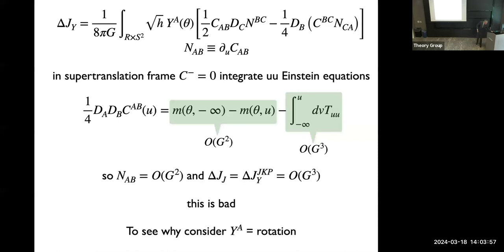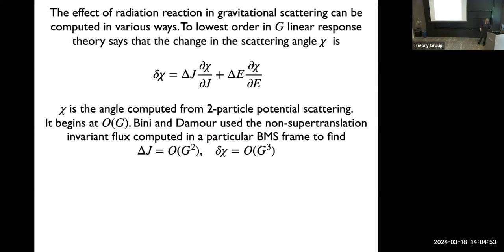The time derivative of the shear is also order G-squared. So you get that this invariant definition of the angular momentum flux starts at order G-cubed, because you have something order G-squared times G-squared divided by G — same thing here. You have a formula in which the flux of angular momentum begins at order G-cubed. And that is actually not what we expect, not even from textbook calculations. To see why this is a problem, let's look at the flux of angular momentum for a rotation. You can use the following: when you want to compute the effect of gravitational radiation in scattering at the lowest order in G, you can use linear response theory.